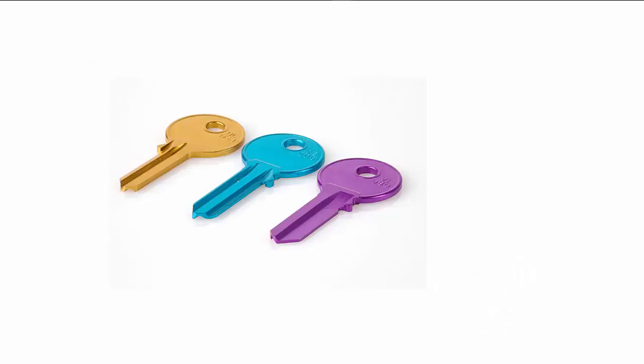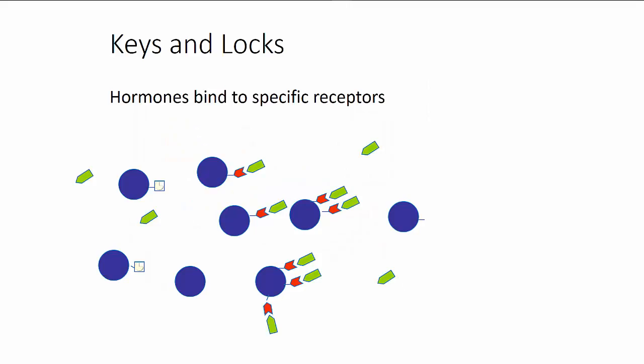You can think of these chemical signals, these hormones, as keys. The keys are made in the endocrine glands and are released into the bloodstream and go everywhere. Certain cells, target cells, have locks or receptors that these keys will fit into. When the key and lock combination come together, when the endocrine hormone and receptor come together, it changes the activity of the cell.